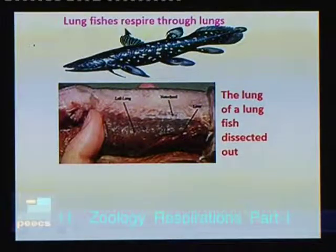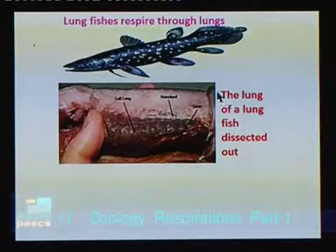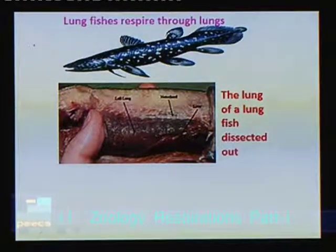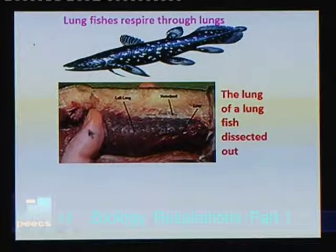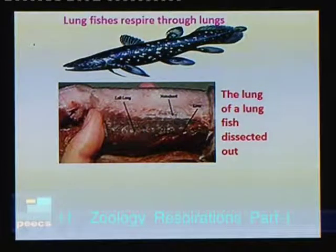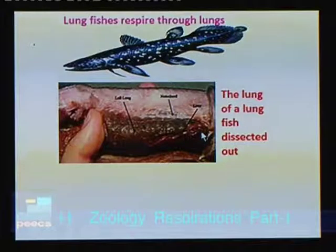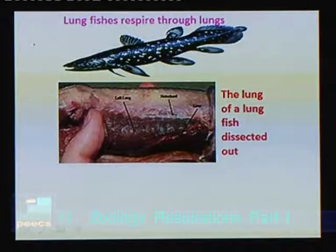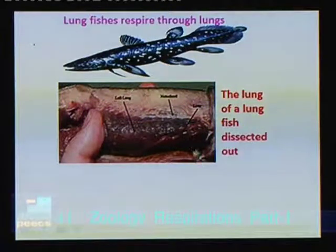Lung fishes respire through lungs. A lung fish has a pair of lungs, one on each side. The lung extends from the anterior region of the head to the middle of the body. Dorsal to the lung is the notochord, and ventral to the lung is the liver. The lung fish respires using these lungs.